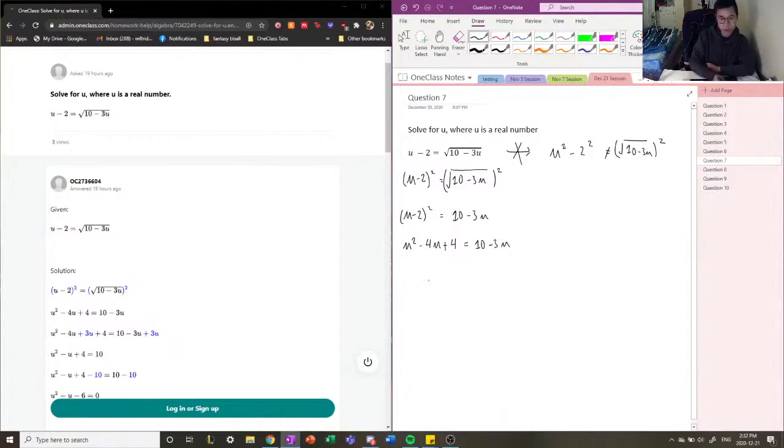If we move three u over to the other side, we get u squared minus u plus four equals to 10. So now we have moved all our u's to the other side and we can now evaluate where we want to move on here. We can move the constants to the right side and solve for u, but that's still a little bit difficult because we have to use some guesswork.